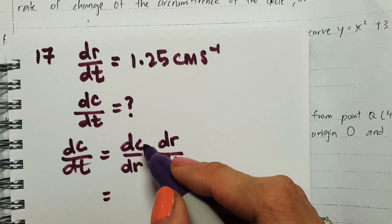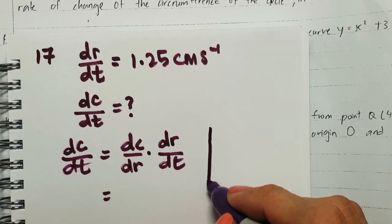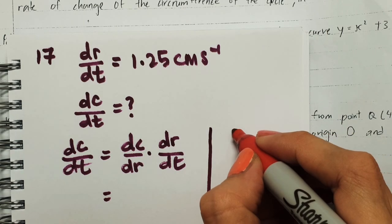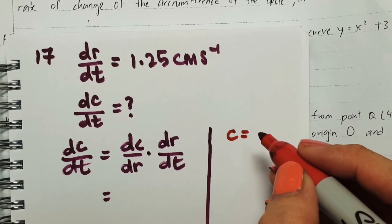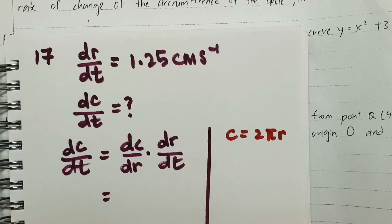But we do not have circumference that is written in terms of r. So on the other hand, we can write circumference. How do we find circumference? That is 2πr, isn't it?